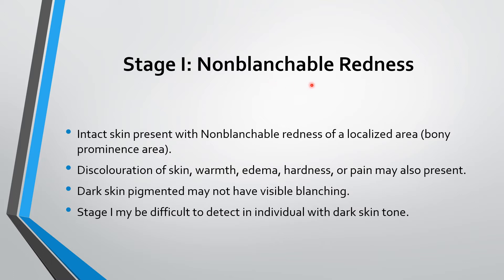Non-blanchable redness means when you apply pressure on that area — the bony prominence area where you see redness — there is no change in color. The color does not change when you apply a little pressure on that redness area. In this stage, intact skin is present with non-blanchable redness of a localized area such as a bony prominence area. The skin has no damage — it is intact skin with non-blanchable redness, with no tissue loss.